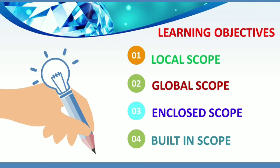The scope of a variable is the part of the code where it is visible. Today we will discuss variable scope. In this session we will learn the different types of variable scope: local scope, global scope, enclosed scope, and built-in scope.